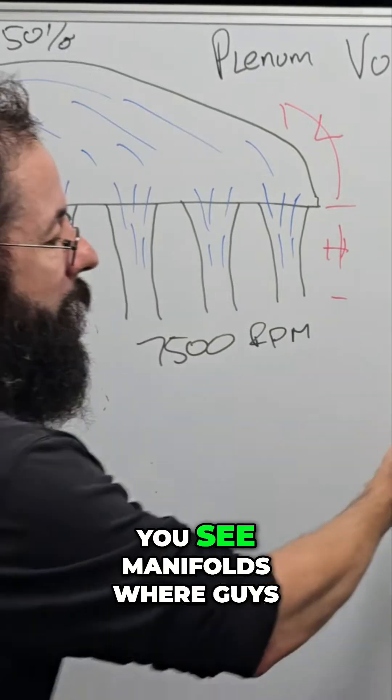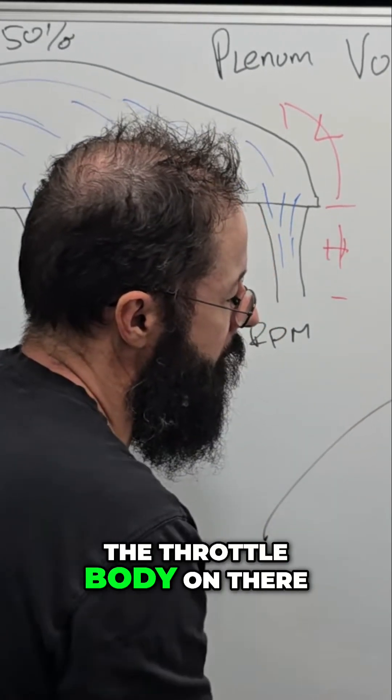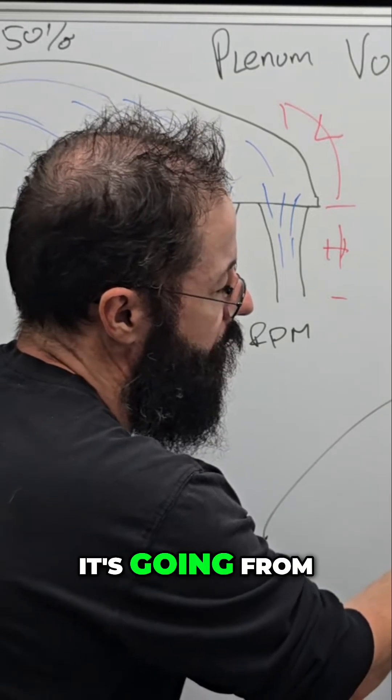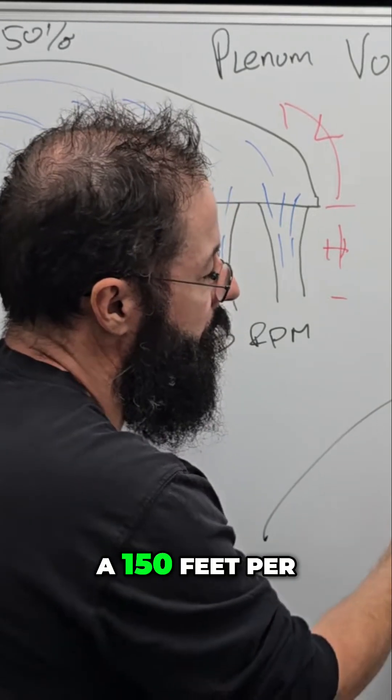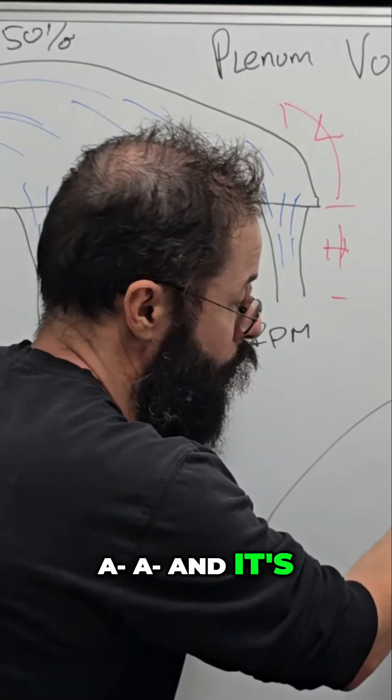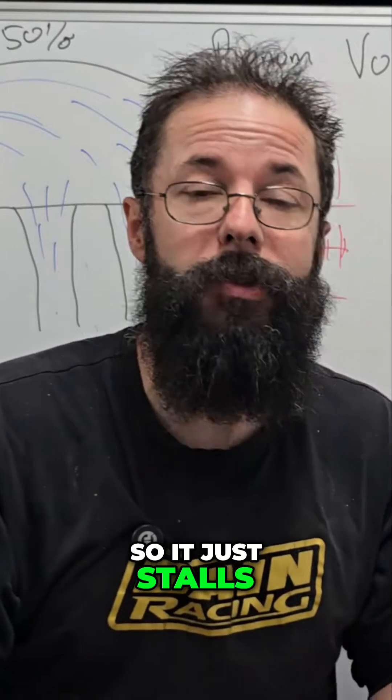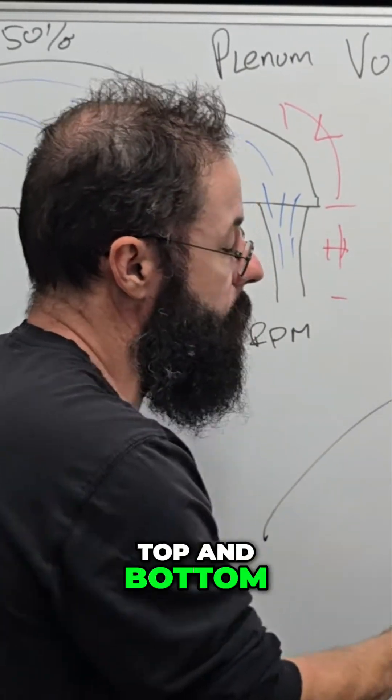This is why if you see manifolds where guys, they have a plenum like that and they just bolt a throttle body on there, it's going from 150 feet per second to maybe 75 and it's transitioning over a dead line. So it just stalls. Obviously this creates a ton of eddies top and bottom and creates a lot of restriction in the manifold.